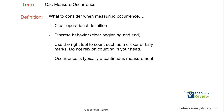Finally, what to consider when measuring occurrence. We want a clear operational definition — just like anything, if we want to measure accurately, validly, and reliably, we need to know what we're measuring. We've got to measure the same thing over and over again. We want a discrete behavior with a clear beginning and end, because we are going to be counting that behavior. Whether you're just using frequency or using rate, you still have to count the behavior consistently. Use the right tool: use a clicker or tally marks — don't just rely on counting in your head. Occurrence is often a continuous measurement; rate and frequency are both types of continuous measurements.